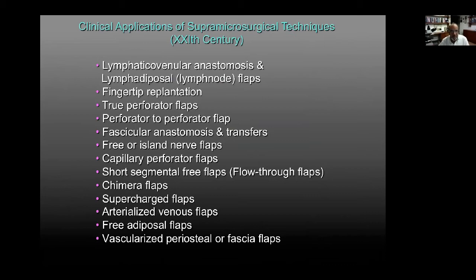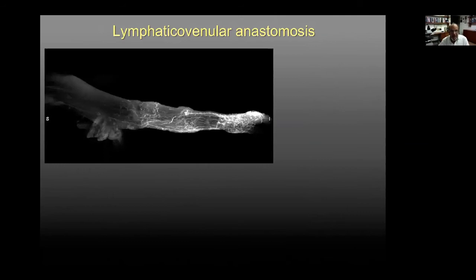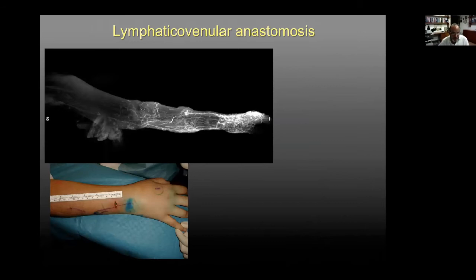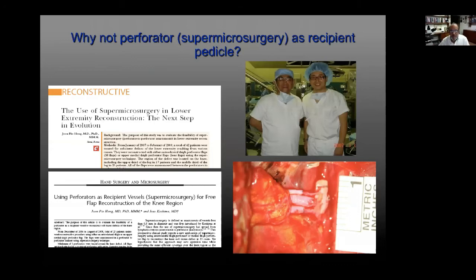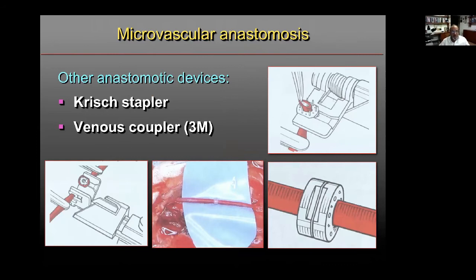The applications of supramicrosurgery continue to evolve and increase every year. The main applications include lymphovenous anastomosis in patients with lymphedema—connecting the lymphatic vessel to a vein through a small skin incision—fingertip replantation, and more recently the perforator-to-perforator microvascular anastomosis described by JP Hall to spare major vessels when doing a free flap for lower extremity reconstruction. The venous coupler device is also popular, though it cannot be used for veins less than one millimeter.